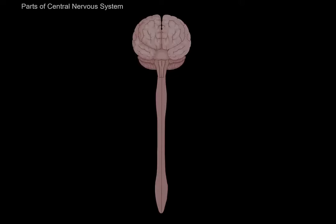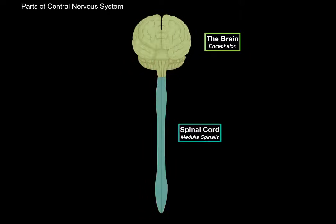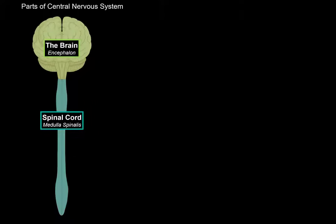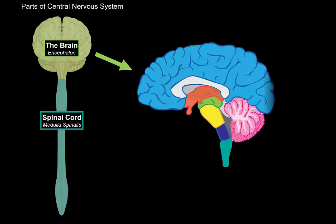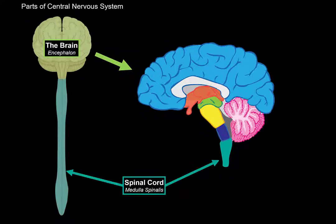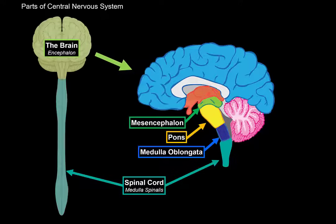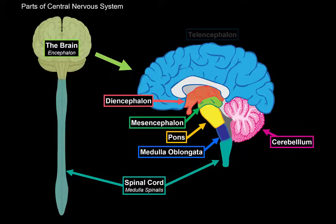Remember, the central nervous system consists of two parts: the encephalon and the spinal cord. The encephalon is further subdivided into specific parts. We have the brainstem, which consists of the medulla, pons and the midbrain, or the mesencephalon. We have the cerebellum, and then the diencephalon and the telencephalon.